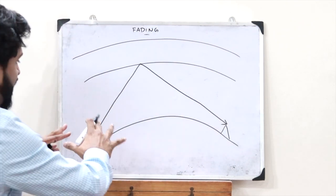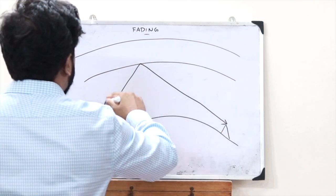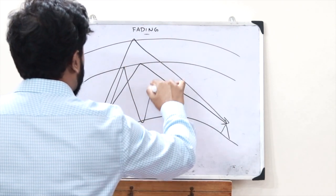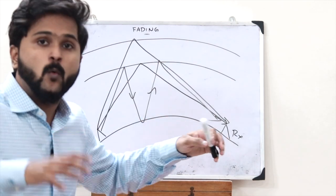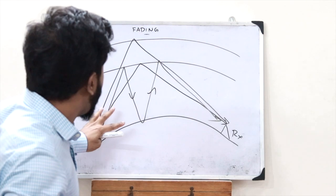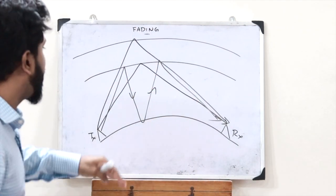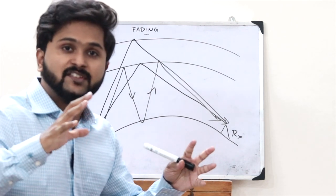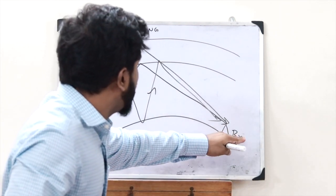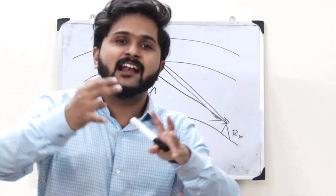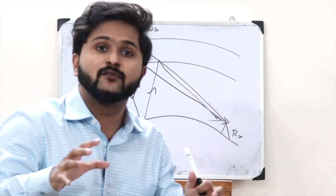To address this, the same signal is sent to the receiver through multiple paths. At the receiver, it takes the vector sum of all these different paths and deduces the information that was actually sent by the transmitter. However, in such a scenario, certain random fluctuations or variations in the amplitude or the phase are observed at the receiver. This phenomenon — random fluctuations or variations in the amplitude or phase of the signal — is what we refer to as fading.